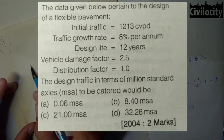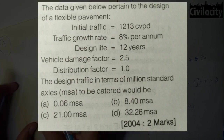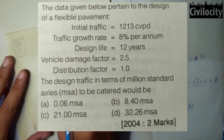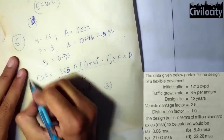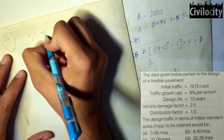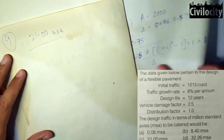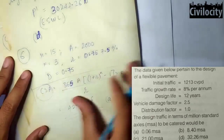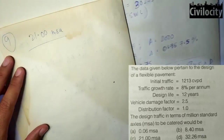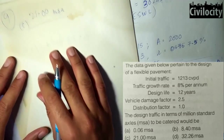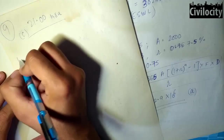Our ninth question provides data — initial traffic, growth rate, design life, vehicle damaging factor, and distribution factor — and asks for design traffic in MSA. Substituting directly into the CSA formula gives 21.00 MSA, which is option C. Note: CVPD in initial traffic stands for commercial vehicles per day.